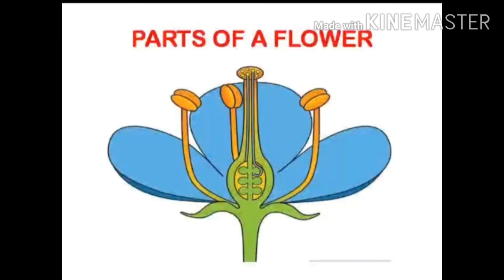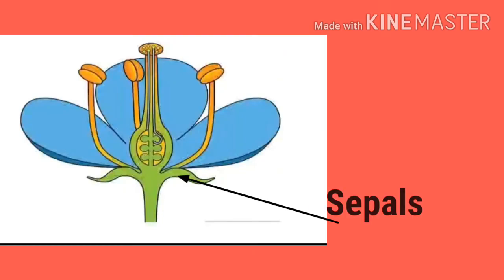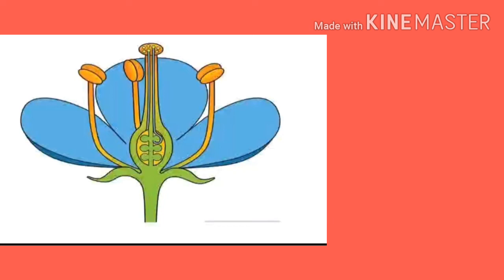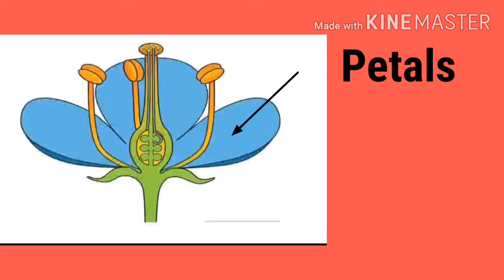Do you know which is the most prominent part in a flower? Did you see this part? That part is made of small leaf-like structures. They are called sepals and they are green in colour. These coloured parts are petals. Take a flower and observe its petals and sepals. If you get a hibiscus flower, it is better to observe all the parts.